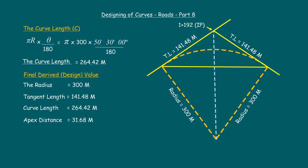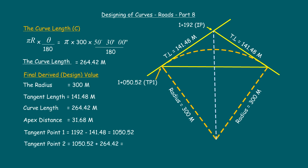Now let us fix these values on site. The chainage of the intersection point is 1192 meters. Subtracting the tangent length of 141.48 meters gives the chainage of tangent point 1 as 1050.52 meters. The chainage of tangent point 2 is 1050.52 meters plus the curve length of 264.42 meters, giving 1314.94 meters. This completes the design of the simple curve.